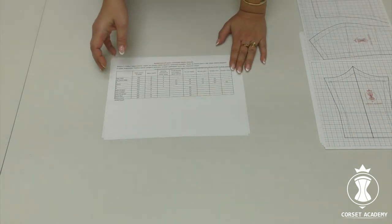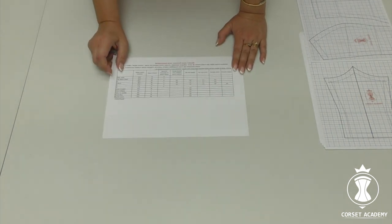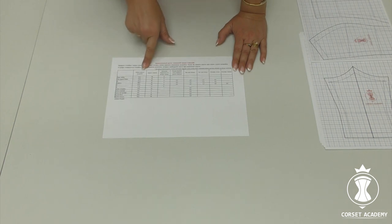There are two tables with examples in this course. The first table indicates the measurements of my client. However, the pattern adjustment for my model is minimal and it does not illustrate the peculiarities for adjustments of a standard pattern.